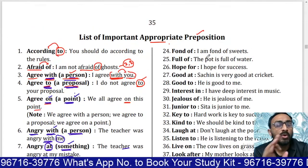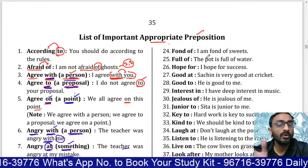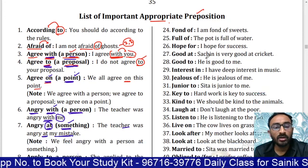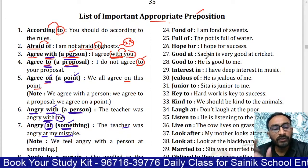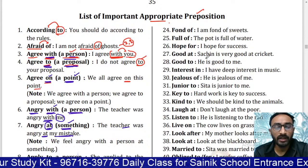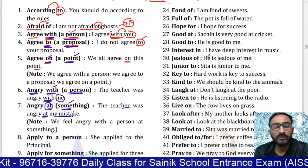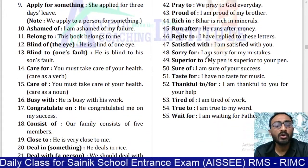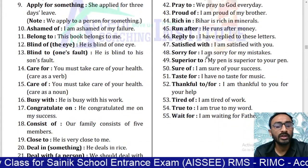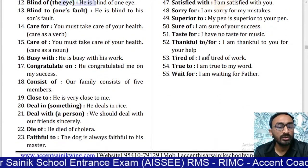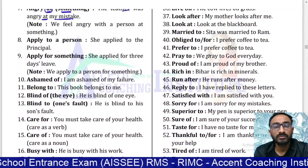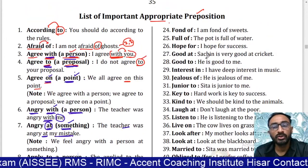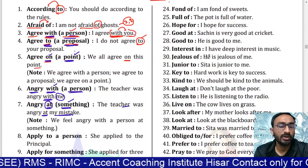There are approximately more than 1,000 words followed by appropriate prepositions, but you need to learn only 55. In the exams, questions will be asked from these 55 words. These are really very common for school students.